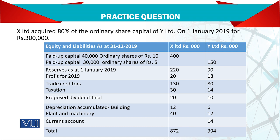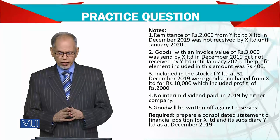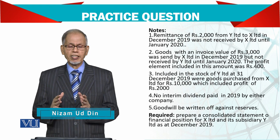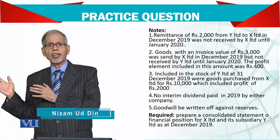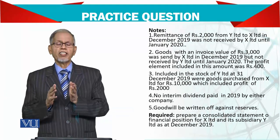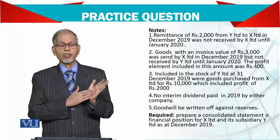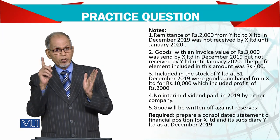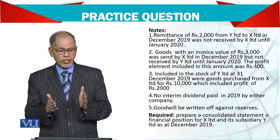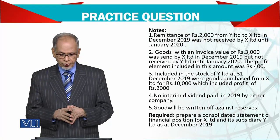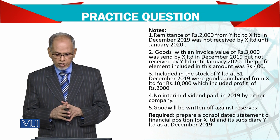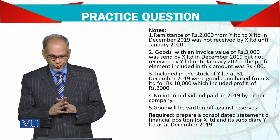अगर current account balances reconcile नहीं हो रहे हैं तो आप cancel out नहीं कर सकते — cancel करने के लिए पहले reconcile करना जरूरी है। Note में आएगा: remittance of 2,000 from Y to X in December 2019 was not received by X Limited। Y ने पैसे भेजे, X को नहीं मिले। Consolidation के लिए cash in transit को debit करना पड़ेगा और जिस party ने भेजे उसको credit करना पड़ेगा।